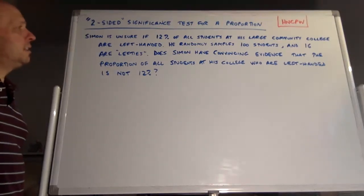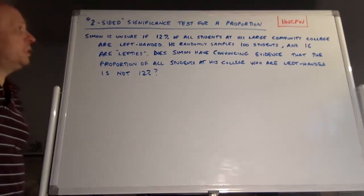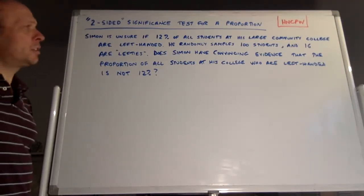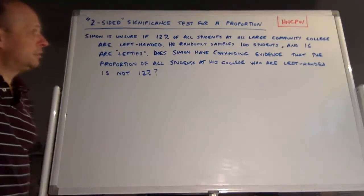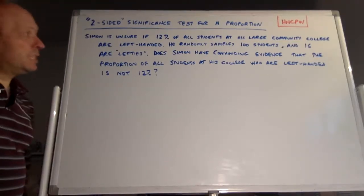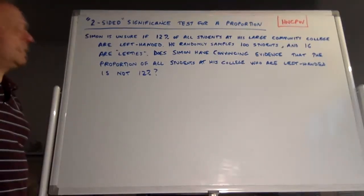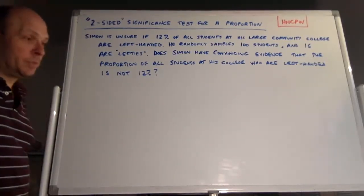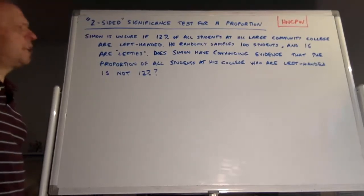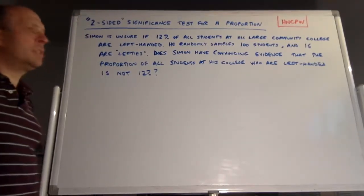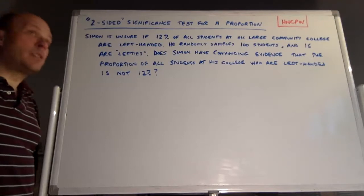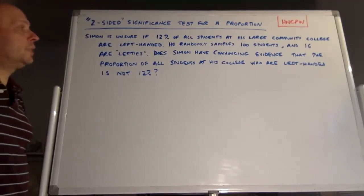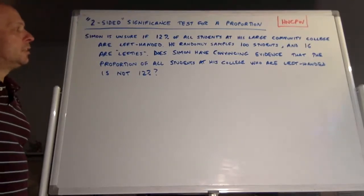You may recognize this scenario from a homework problem. Simon is unsure if 12% of all students at his large community college are left-handed. He randomly samples 100 students and 16 are lefties — that's 16 out of 100, obviously 16%, which is not 12. So we make a note of that, because that is some directional evidence that it might not be 12% at this large community college who are left-handed.